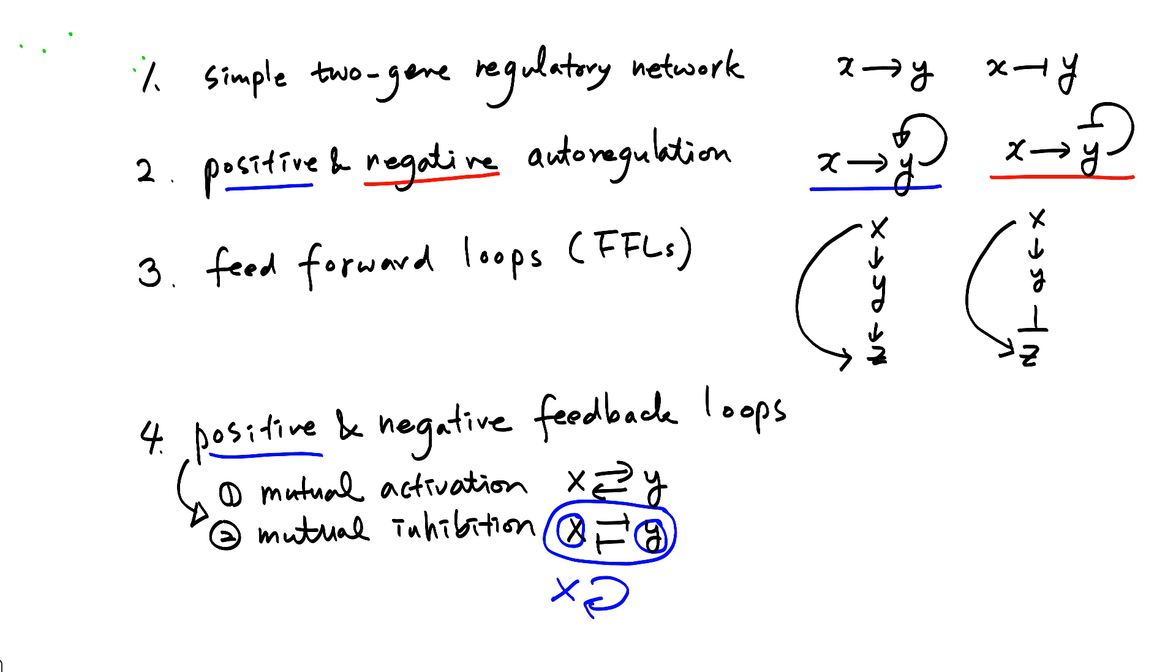Negative feedback loops work like this: X activates Y, and Y inhibits X. This plays a critical role in feedback control that achieves robustness, making the system resilient to noise, disturbance, and fluctuations.